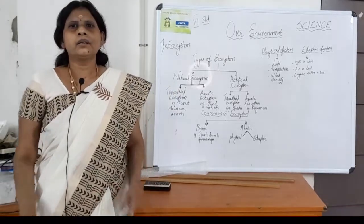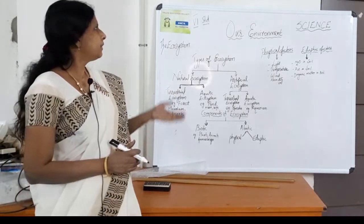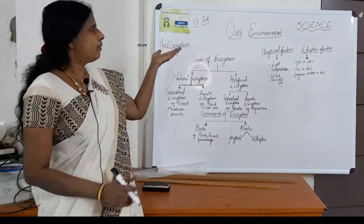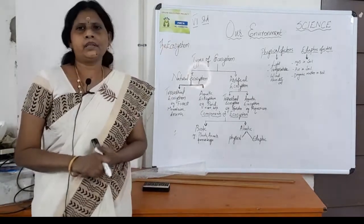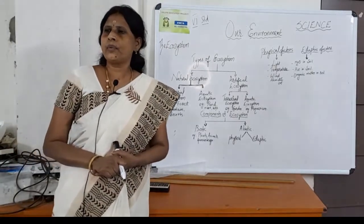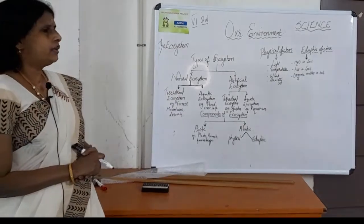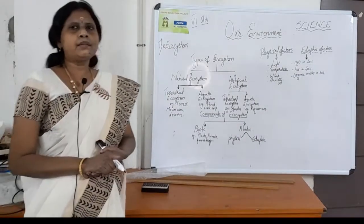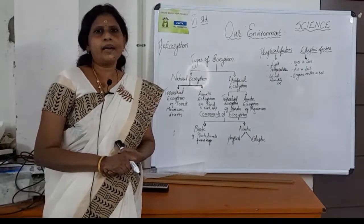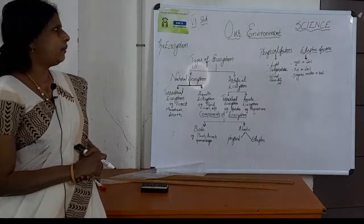Good morning children. Today we are going to see the science third term: our environment. Children, there are so many things around us, isn't it? The space in which a person, plant, and animals live is called our environment.